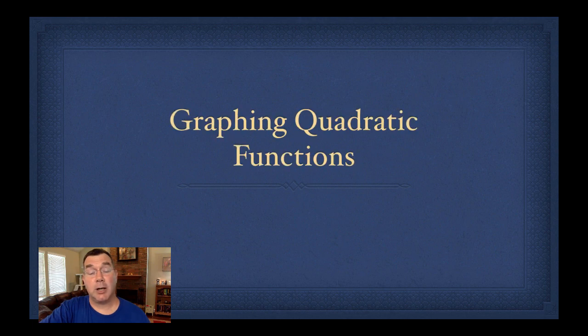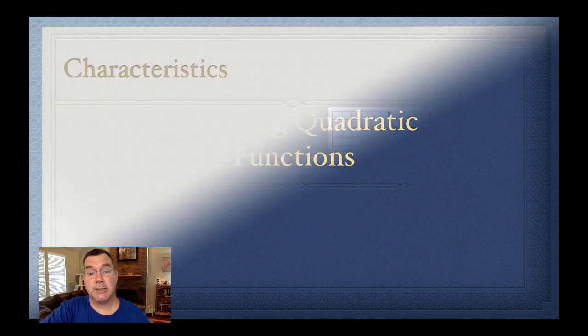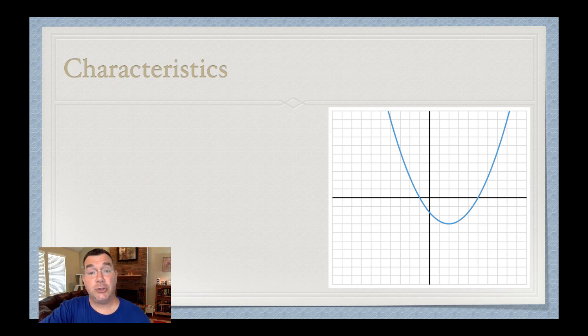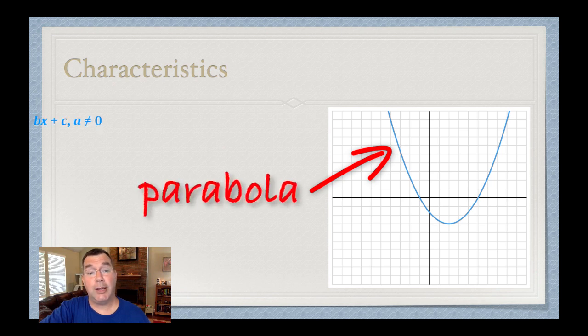Hello again. We are starting a new discussion on a different kind of function. We're going to be talking about quadratic functions, and today we're going to talk about how to graph those. So let's get started. There are certain characteristics about every quadratic function. First of all, when you graph it, it looks like this curved U shape over here. We call that a parabola.